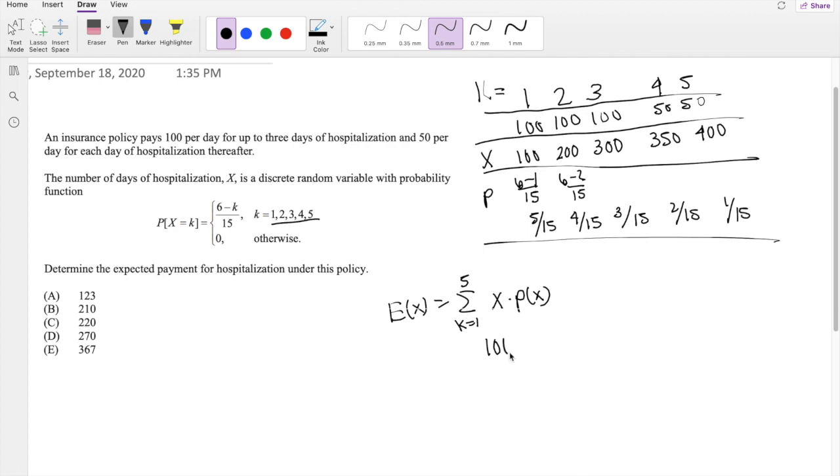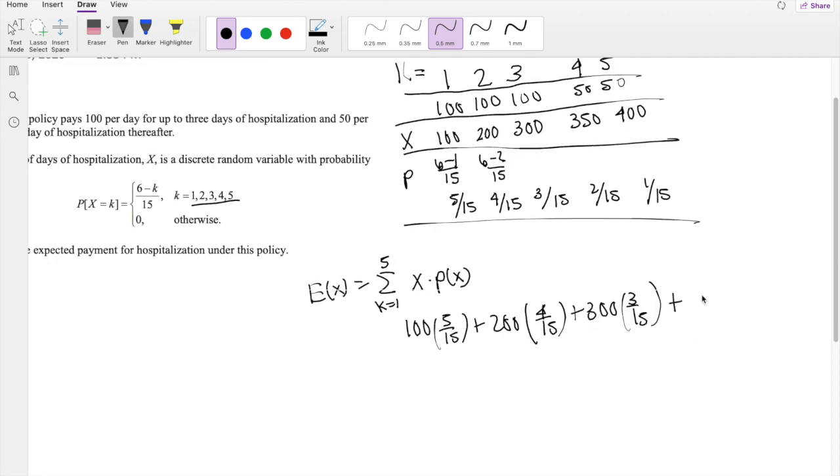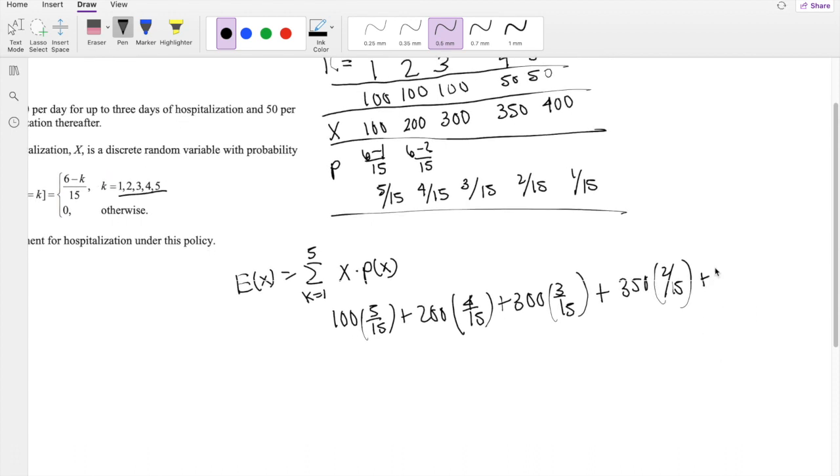So then this is equal to 100 times 5/15, plus 200 times 4/15, plus 300 times 3/15, plus 350 times 2/15, and lastly 400 times 1/15.